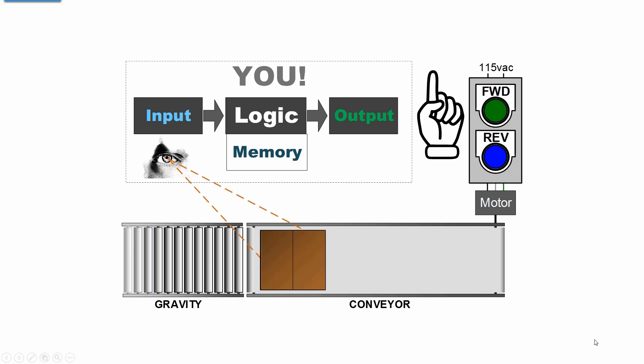Keep in mind that you did not stop the conveyor with your finger. Your muscle reaction released the forward button that opened a contact to remove electricity from the motor. The motor de-energized and the conveyor stopped.